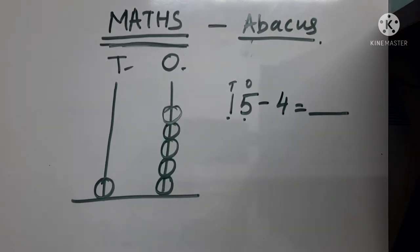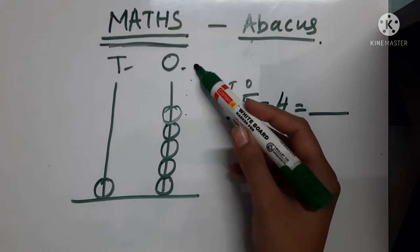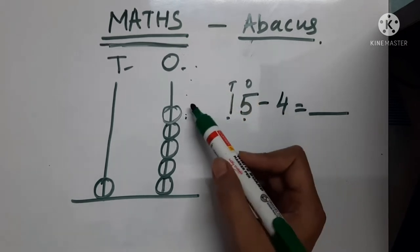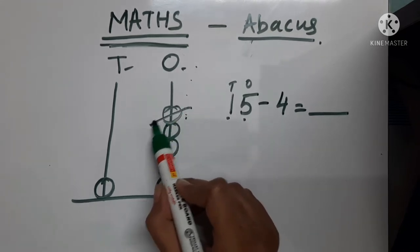It becomes 15. In addition, what were we doing? We were adding beads. In subtraction, what will we do? We will decrease the beads.